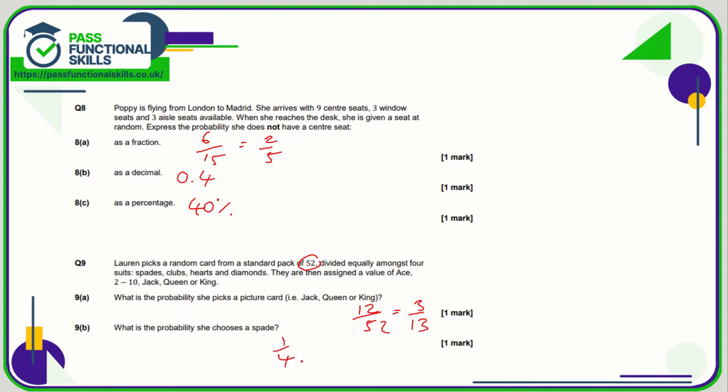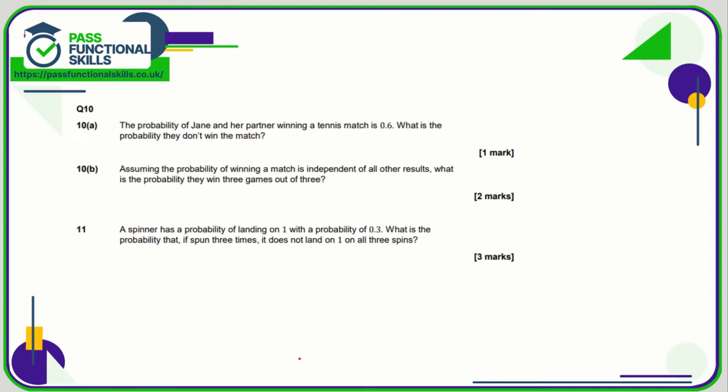Question number 10: the probability of Jane and her partner winning a tennis match is 0.6. So the probability that they don't win is going to be 1 minus 0.6, which is 0.4. Assuming the probability of winning is independent of all other results—in other words, the probability does not change—what is the probability that they win three games out of three?